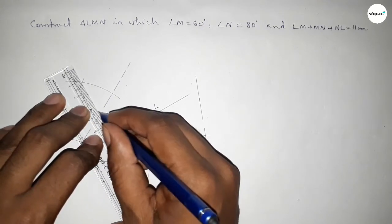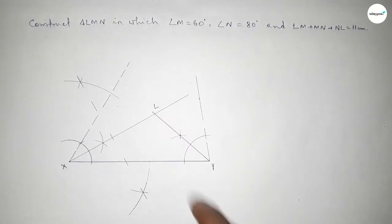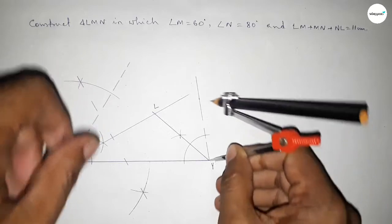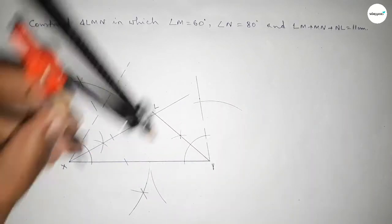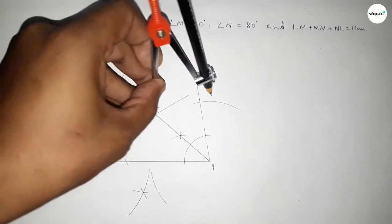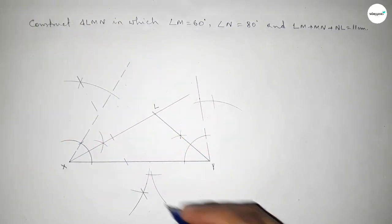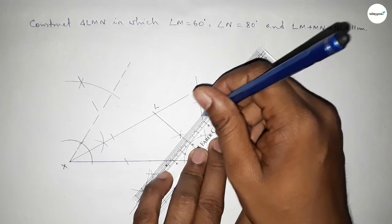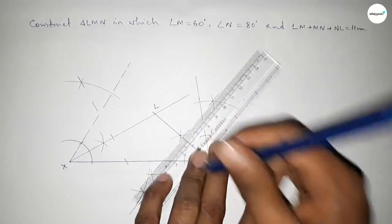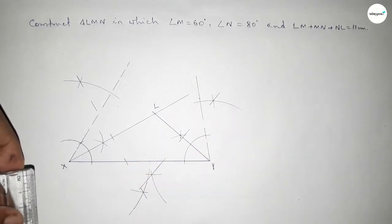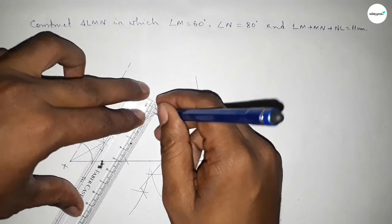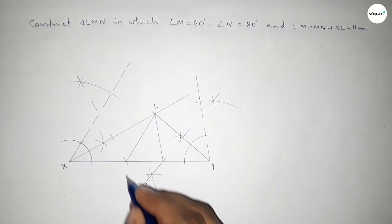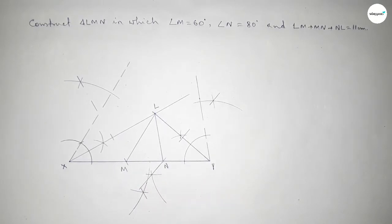Similarly, bisecting the line LY — taking greater than half and drawing arcs so both curves intersect at two points. Joining these lines gives the perpendicular bisectors. Taking the intersection on LX as point M and on LY as point N.